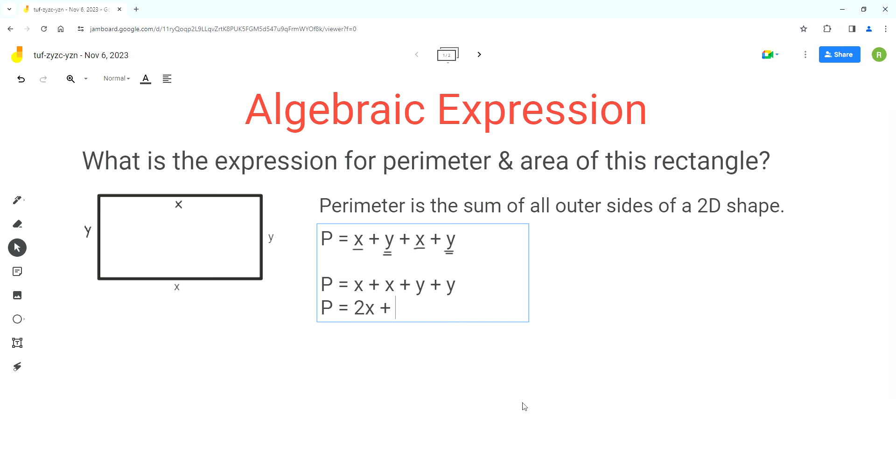We know one plus one is equal to two, so the sum of these two terms is 2x. Now we do the same thing for the y terms. Their coefficients are the invisible ones, so we do one plus one which is equal to two, and we write y with the two. So this is the expression for the perimeter of this rectangle.